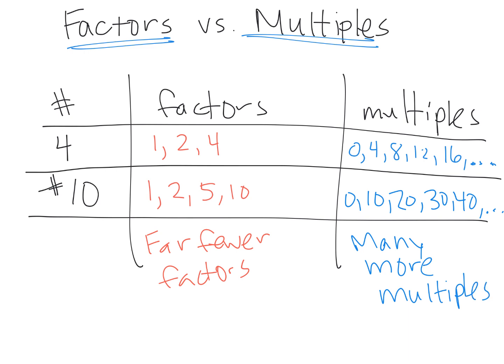The idea is we want students to recognize that the multiples can go on forever, while the factors are always a finite number. They always end. There's far fewer factors and many more multiples. So this is one idea for how to make these two words have a little bit of meaning.